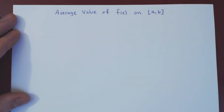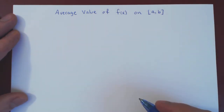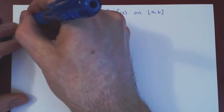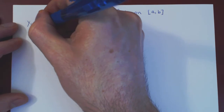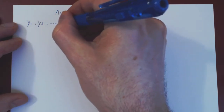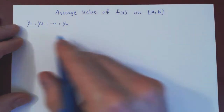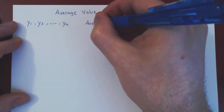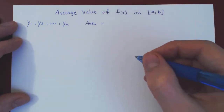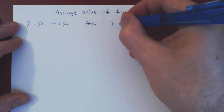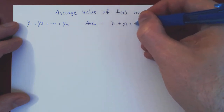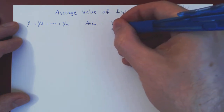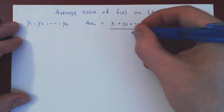Let's remember what is the average value of n real numbers. If you have n real values — y1, y2, up to yn — the average of those n values is simply the sum of all values, y1 plus y2 plus all the way up to yn, and you divide by the total number of values, n.